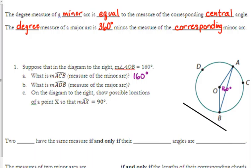The major arc would then be 360 degrees minus 160 degrees, so it would be 200 degrees.